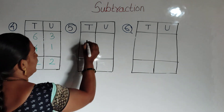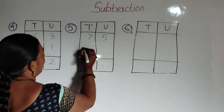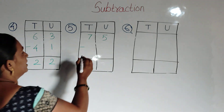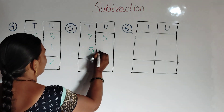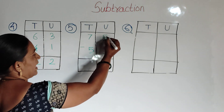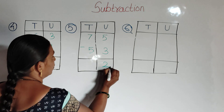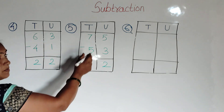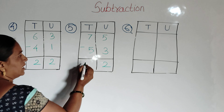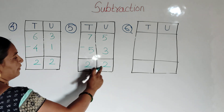75 minus 53. First, units place: 5 minus 3 is equal to 2. Then tens place: 7 minus 5 is equal to 2. So the answer is 22.